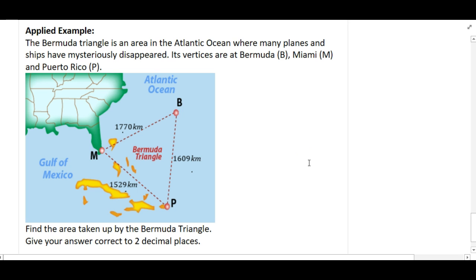Okay, so semi-perimeter first. Add them all up and divide by two. Very simple procedure really, just time consuming. And obviously you've got to know when to use it. So what's the semi-perimeter? 2454.